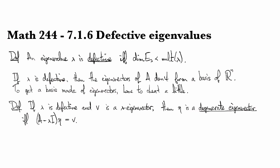And if lambda is defective, then the eigenvectors of A can't form a basis of R^n because they don't span it. You don't have enough to span it. As a consequence, we need to cheat a little to get a basis made from eigenvectors. We have to generalize a bit.